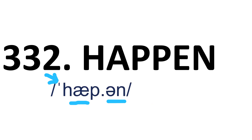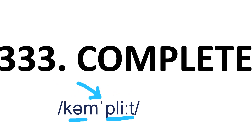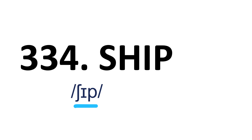Happen — it's a two-syllable word and stress is on the first syllable. Happen. Complete — it's a two-syllable word and stress is on the second syllable. Complete. Ship — it's a one-syllable word. Ship.